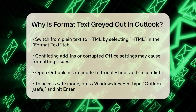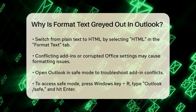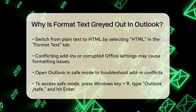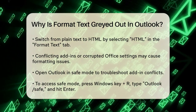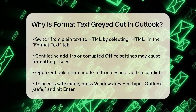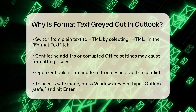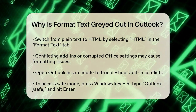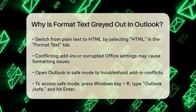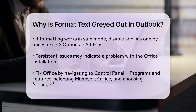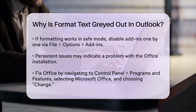Another reason for this issue could be conflicting add-ins or corrupted Office settings. Sometimes certain add-ins can interfere with Outlook's normal functioning. To troubleshoot this, try opening Outlook in Safe Mode. To do this, hold the Windows key and R, type Outlook /Safe in the open box, and press Enter. If the issue disappears in Safe Mode, it's likely caused by an add-in.